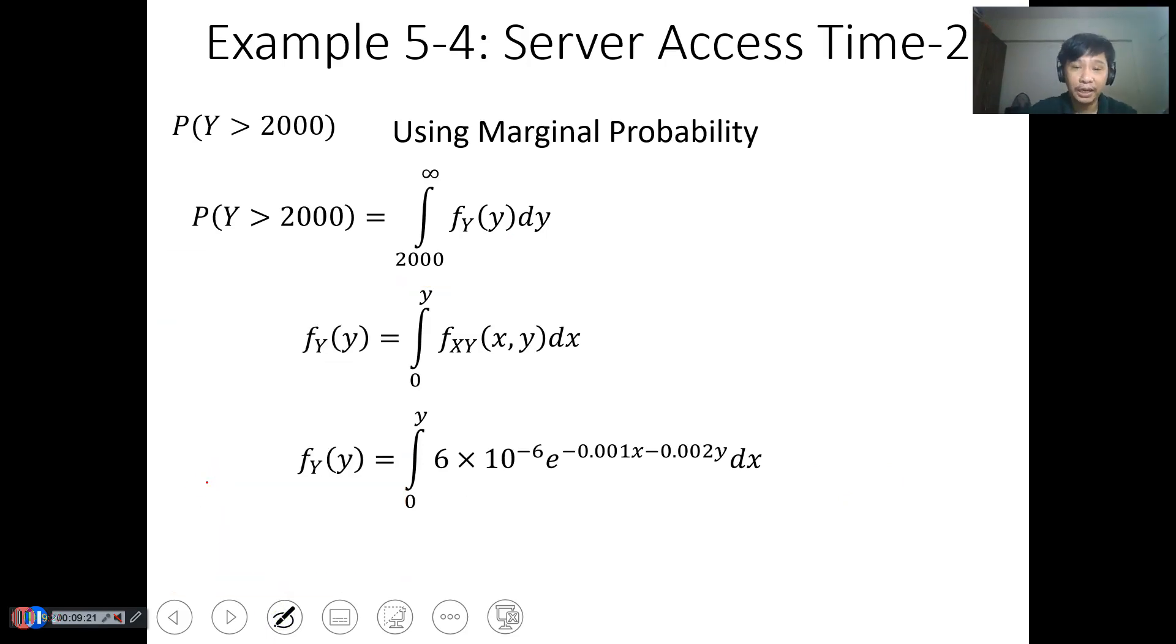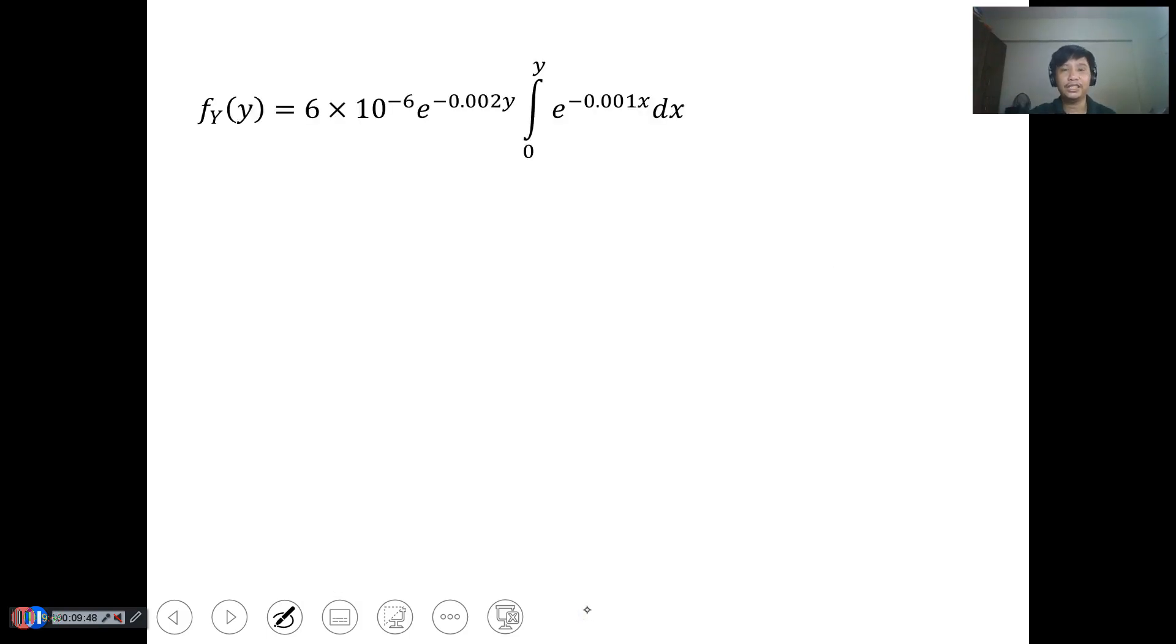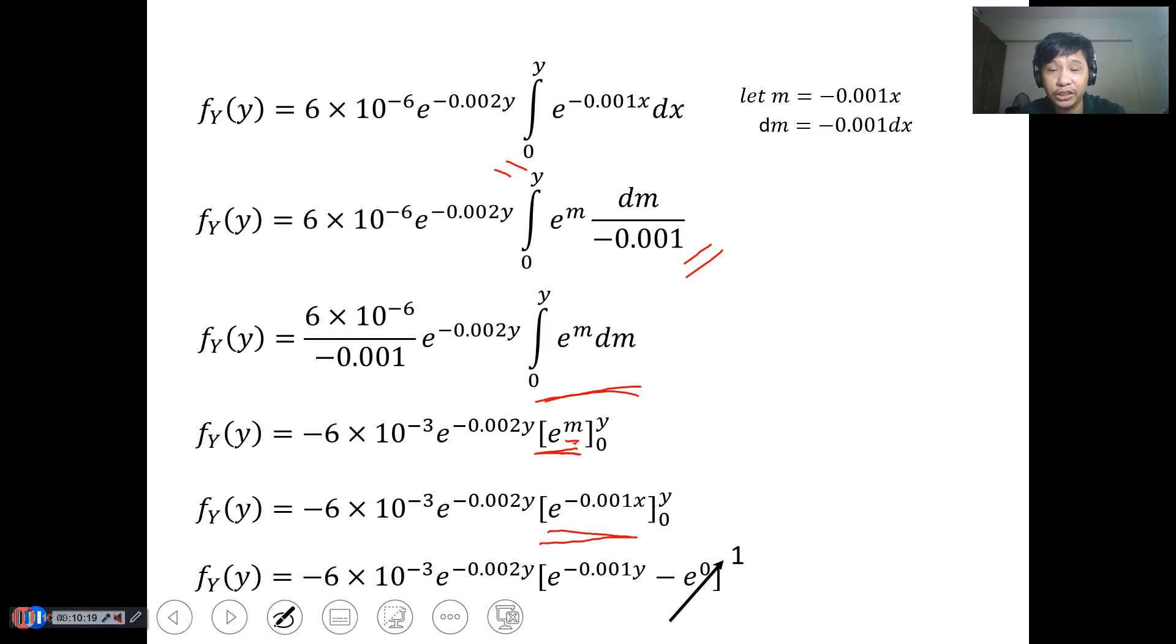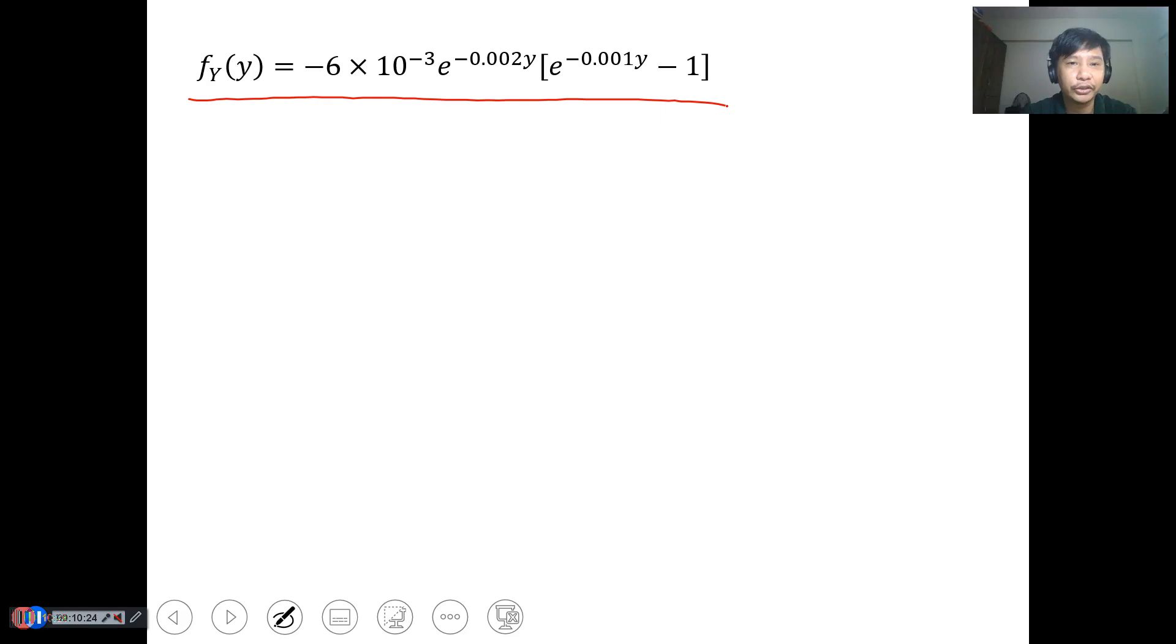This is the integration of f(x,y)dx, from 0 to y as a function, because y function is changing. Substitute - we know this is our function, f(x,y). By integration, we can express it as e^(-0.001x) times e^(-0.002y). Then this is just dx. This expression will be constant, so it comes out of the expression. Just evaluate and integrate this function from 0 to y. Using substitution, it becomes this. By integrating this from 0 to m, we get this value.